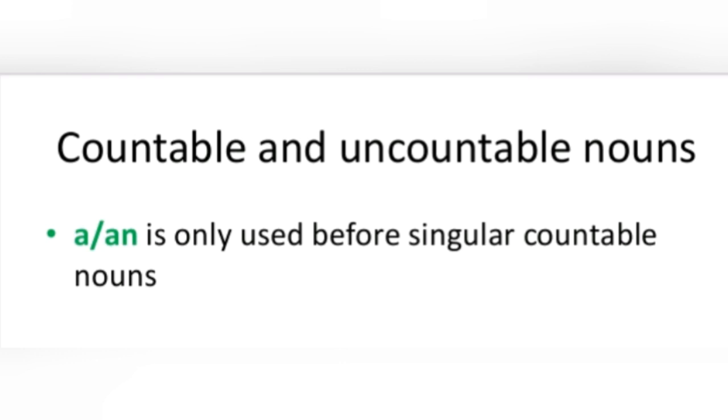I hope you all know what are countable and uncountable nouns. Countable nouns can be counted, for example: an apple, two apples, three apples. Uncountable nouns cannot be counted, for example: air, rice, water. So a or an is only used before singular countable nouns, for example: a book, an orange.